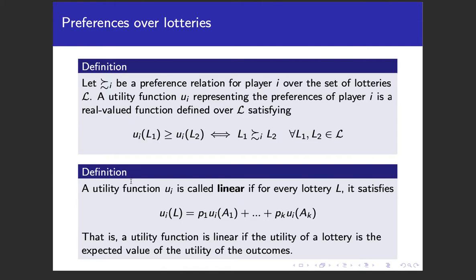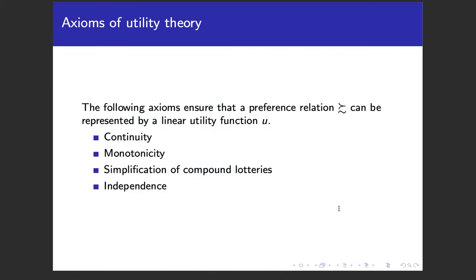We also want our utility function to be linear, meaning it equals the expected value of the utility of all possible outcomes. The utility of a lottery is the probability of getting outcome one times the utility from outcome one, plus the probability of outcome two times the utility from outcome two, and so on.